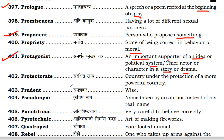Next is protectorate. Protectorate is a country under the protection of a more powerful country. If a powerful country keeps another country under its protection, they call it a protectorate. Next is prudent — meaning wise and very understanding.